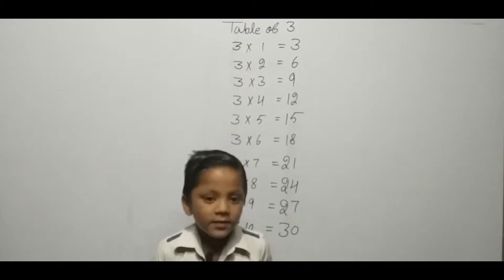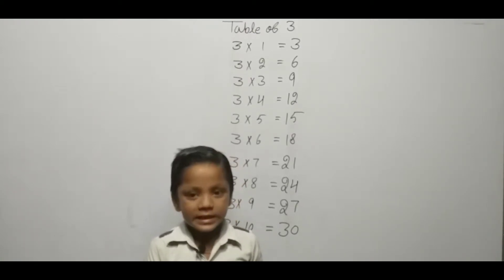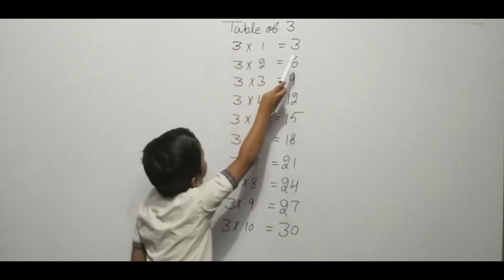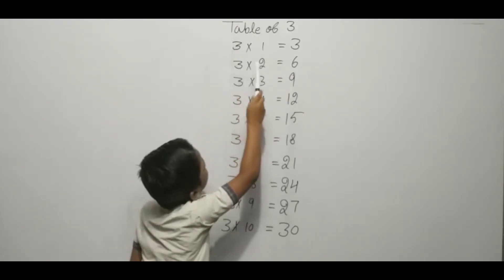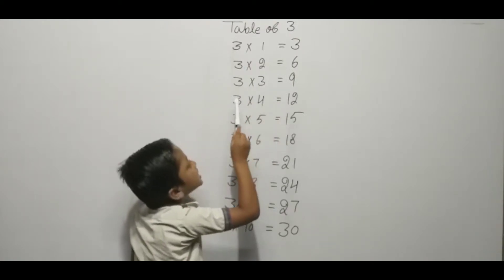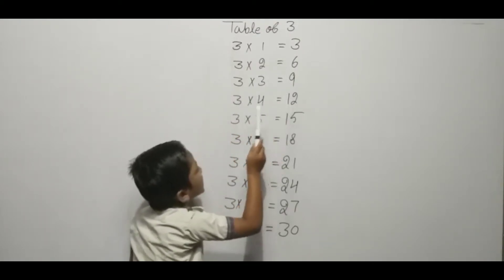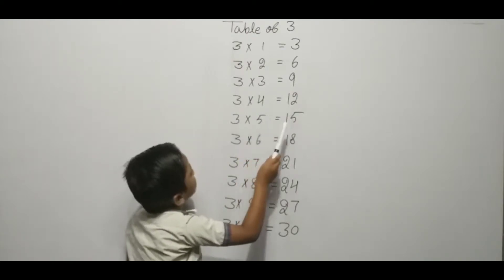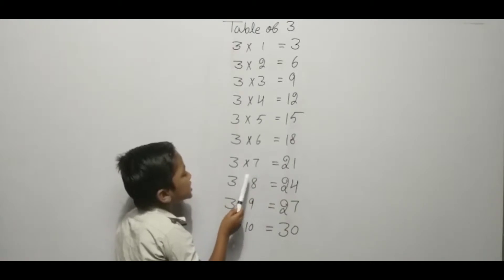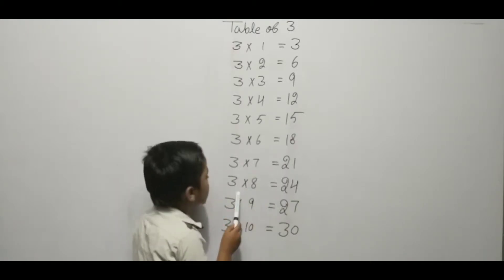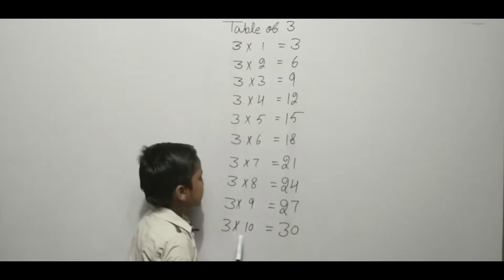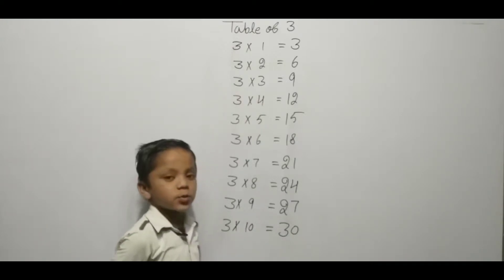Hello friends, we are learning. Table of three. Three one ja three, three two ja six, three three ja nine, three four ja twelve, three five ja fifteen, three six ja eighteen, three seven ja twenty-one, three eight ja twenty-four, three nine ja twenty-seven, three ten ja thirty. Thank you.